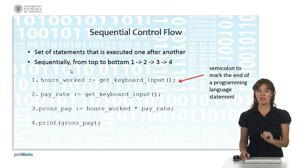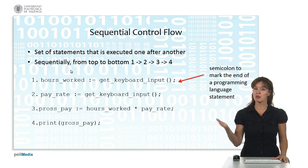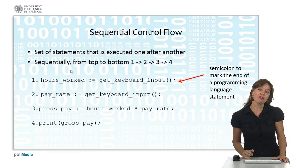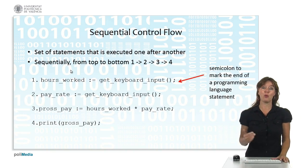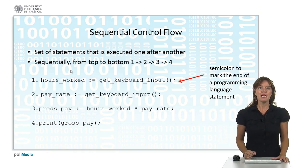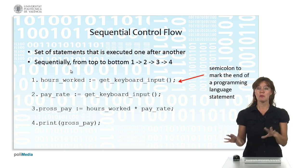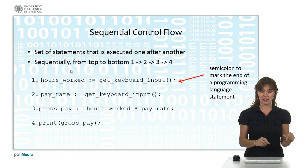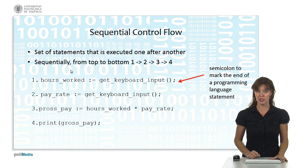We first assign a variable hours_worked from input we get from the keyboard. Then we assign pay_rate also with input from the keyboard. We multiply the two variables and save the result in another variable that we print in the fourth statement.